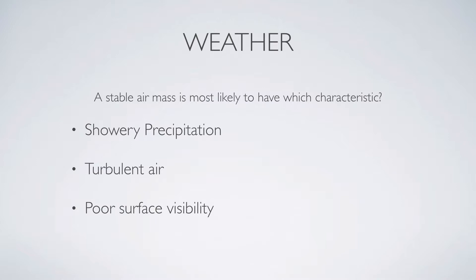So let's start at the top. Is it showery precipitation? This is not the correct answer because typically stable air masses have consistent or steady precipitation. This happens because rain in stable air masses is free of disturbances and has time to settle over a location without being moved or interrupted. That brings about a more steady precipitation as opposed to a showery or sporadic precipitation.